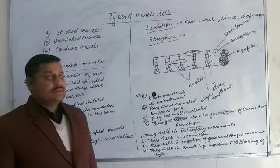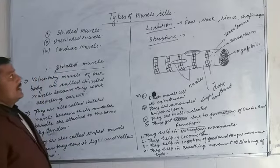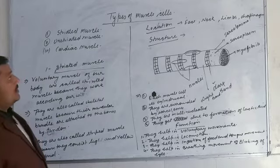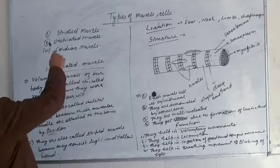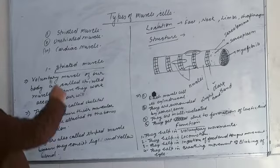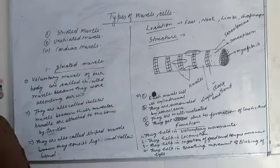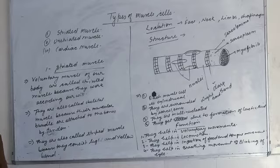Hello, I am going to explain types of muscle cells. Muscle cells or muscle tissue are three types: striated muscle, unstriated muscle, and cardiac muscle. These are the three basic types of muscle.